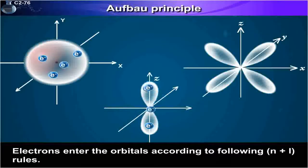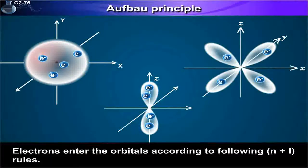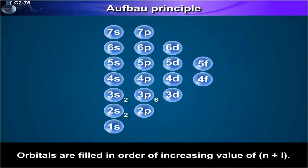Electrons enter the orbitals according to following n plus l rules. Rule 1: Orbitals are filled in order of increasing value of n plus l.